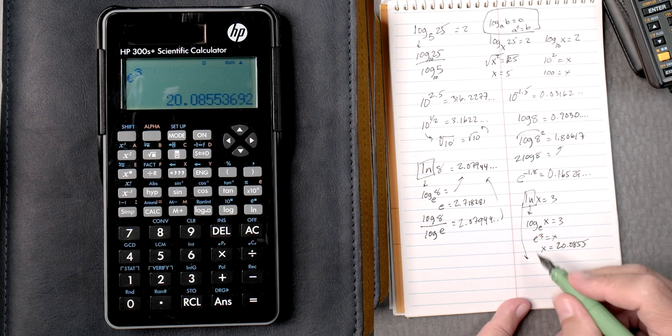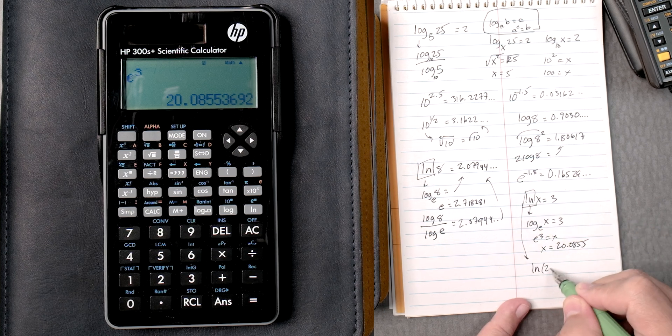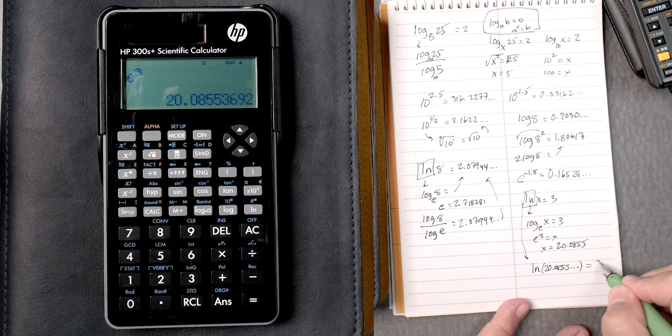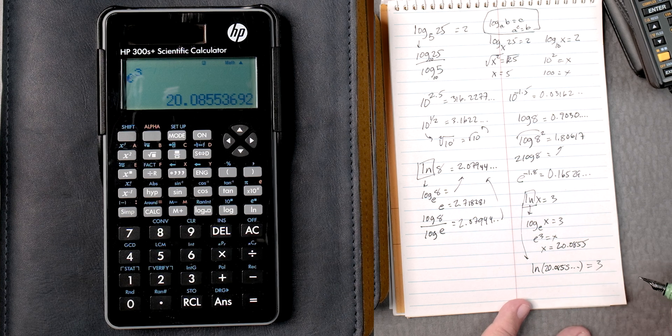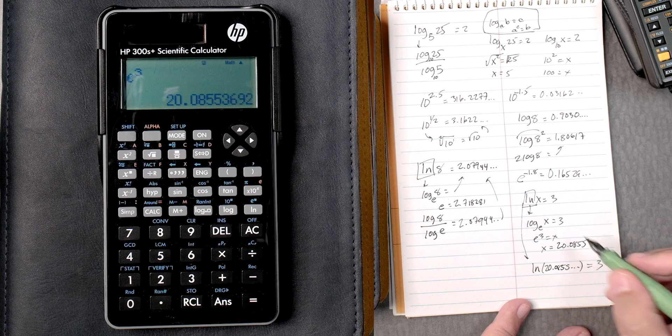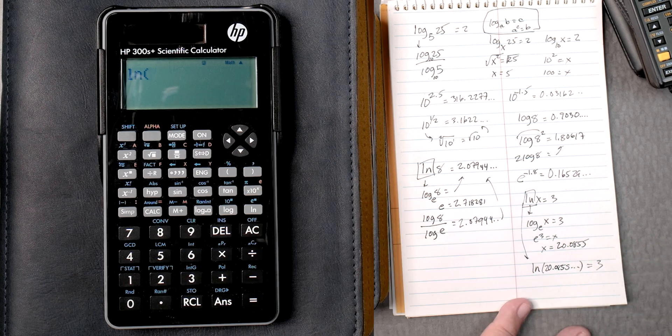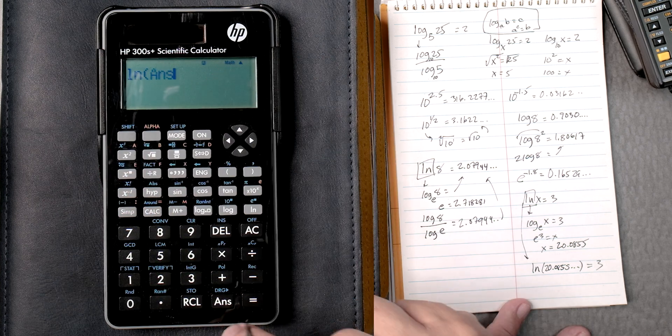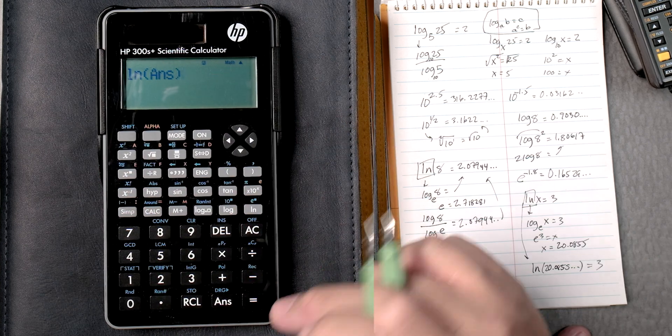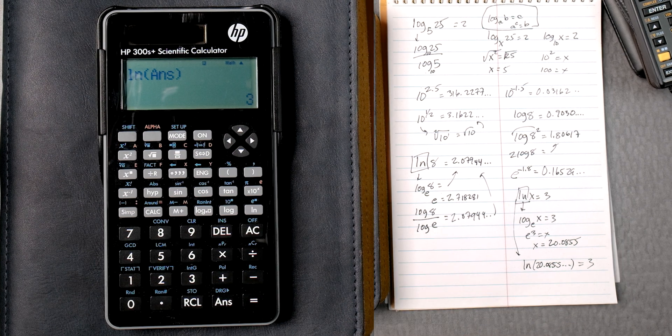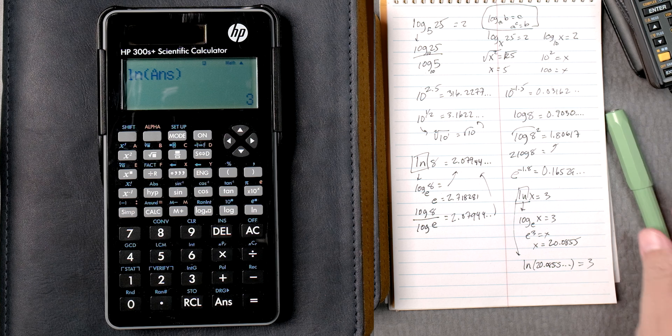What does this mean? Well, if we go back and we say the natural log of 20.0855 with all the numbers, that should give you 3. Is that right? So what we can do is take the natural log, and then you press answer, the previous answer. We can close it. Equals 3. Oh, wow. That was a lot of work, wasn't it?